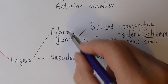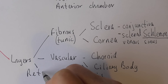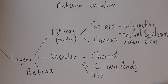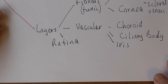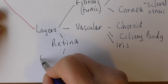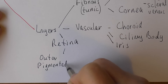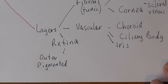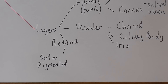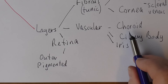So the layers are: fibrous, vascular, and the last one is the retina. The retina has an outer pigmented area which is dark in colour, because we don't want light rays bouncing around inside — we don't want them reflecting inside the eyeball, as that could generate additional false images and make vision very glary. So there's an outer pigmented layer, and that is immediately on top of the choroid, the vascular layer.